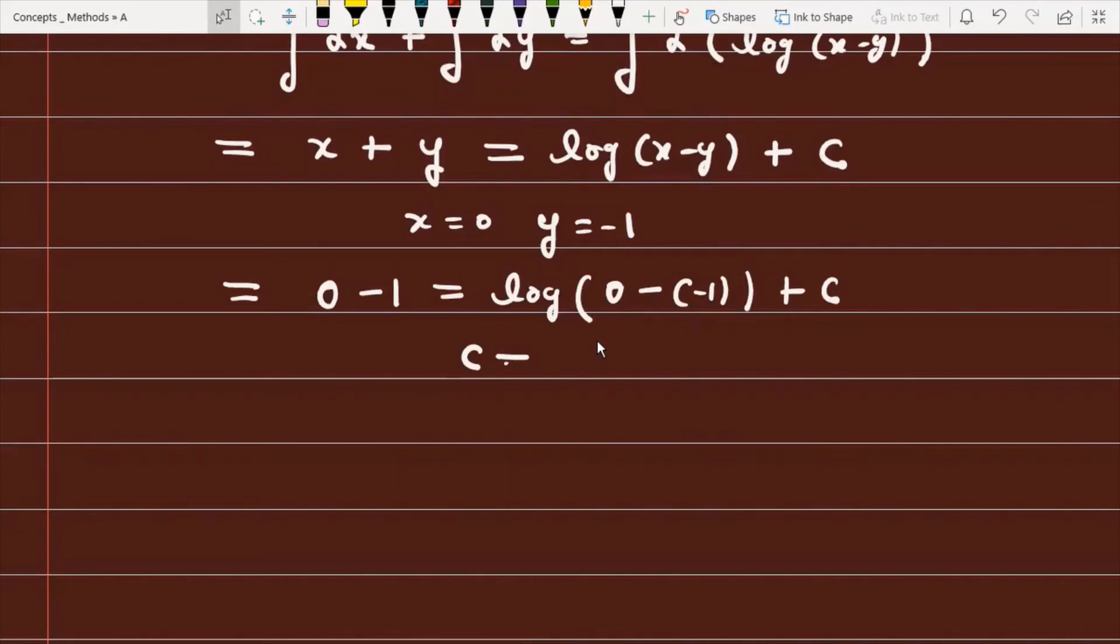Now here you can see that C = -1, because log 1 = 0.